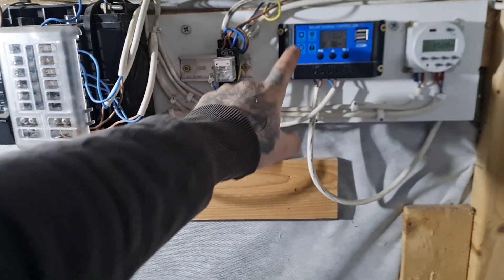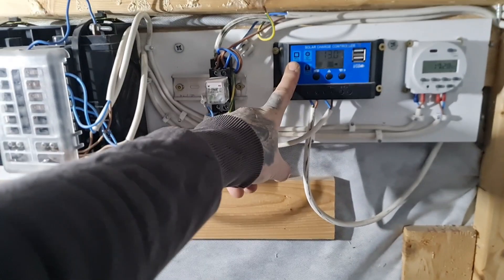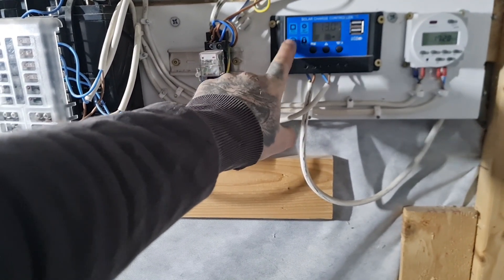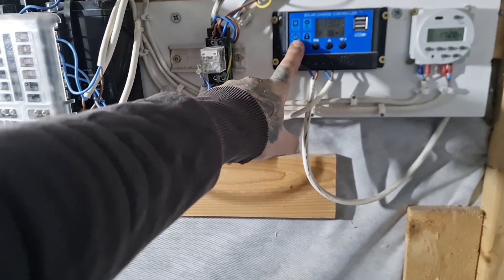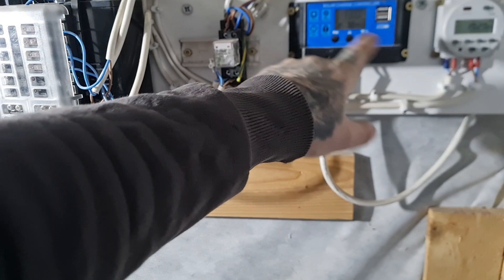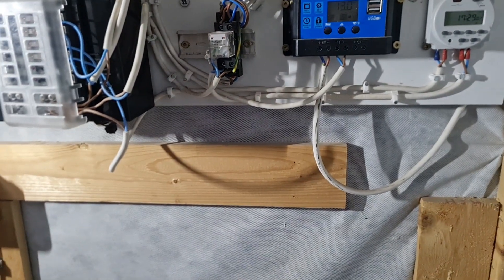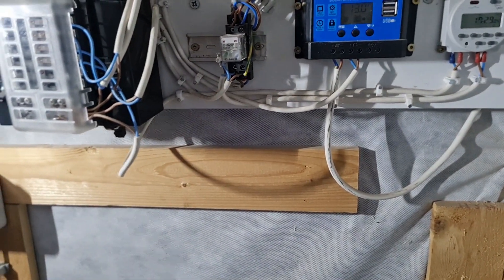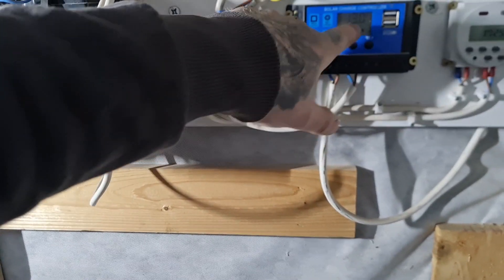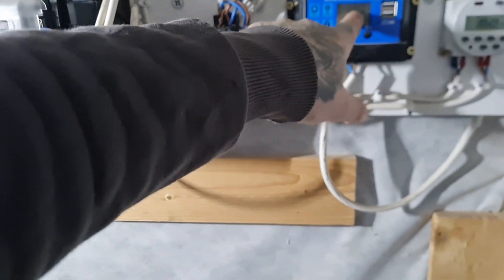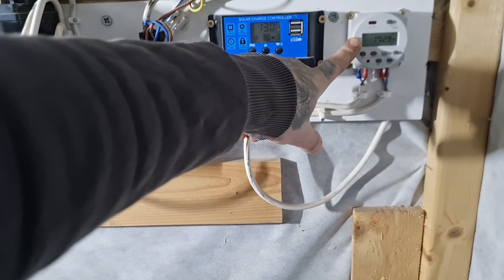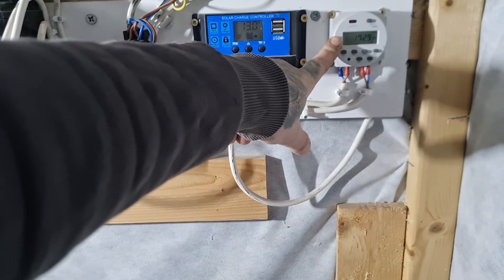First we have the battery here, a fuse box, power relay, this solar charge controller. It doesn't do much honestly - I didn't know that when I bought it. It's showing like when it's charging from the solar panel. Now it's fully charged with 13 volts and we have this timer controller.